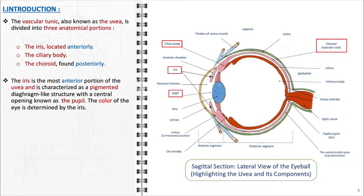Functionally, the iris regulates the amount of light that enters the eye by adjusting the size of the pupil in response to light intensity.